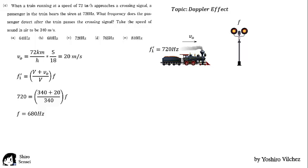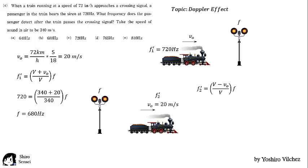Now, we do the same process as the train is moving away from the crossing signal. Now, in the numerator, we subtract the speed of the train from the speed of sound. Replacing values, we finally get that the frequency detected is 640 Hz. Alternative A.